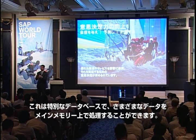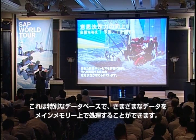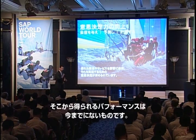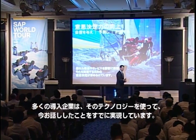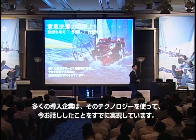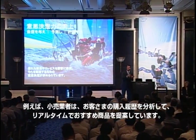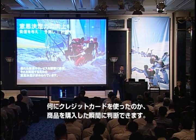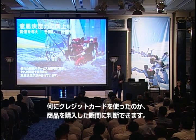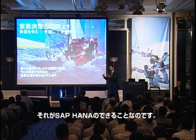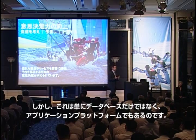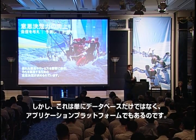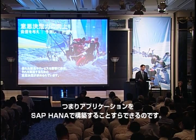HANA is a special kind of database that runs with all of its data in main memory. The performance gains are unbelievable. Our customers are using the technology to do things like comparing what the customer is buying to recommendation models in real time while they swipe their credit card. That's what you can do with HANA because it's so incredibly fast. And it's more than just a database — it's an application platform as well. You can build applications on HANA.